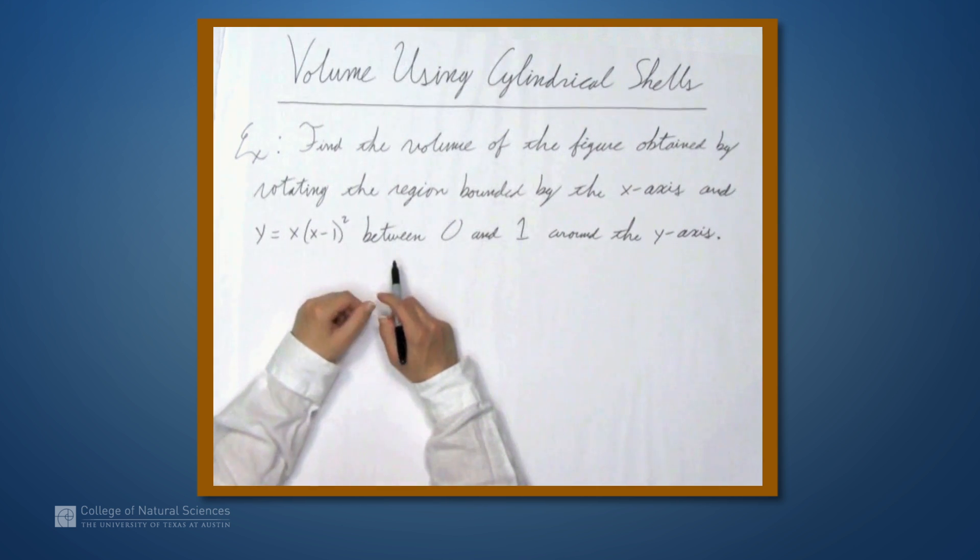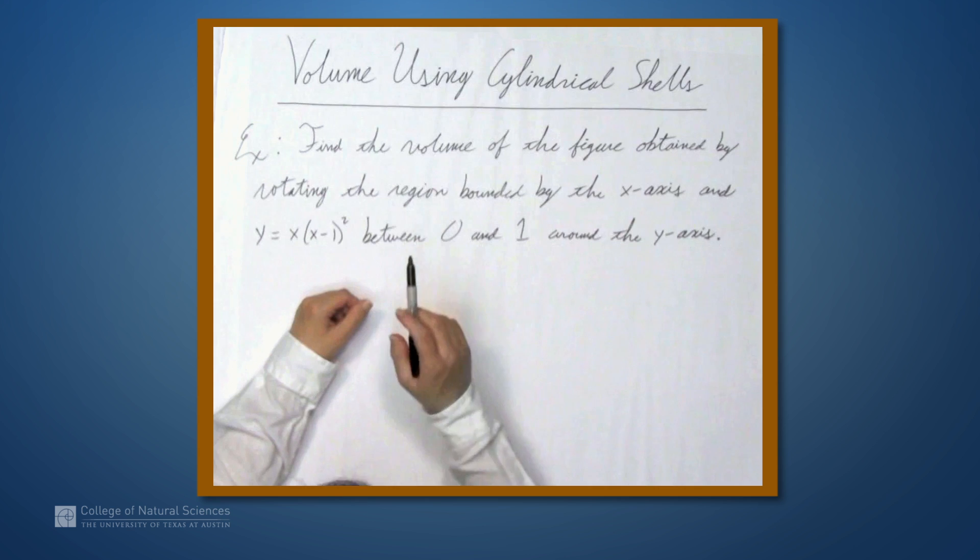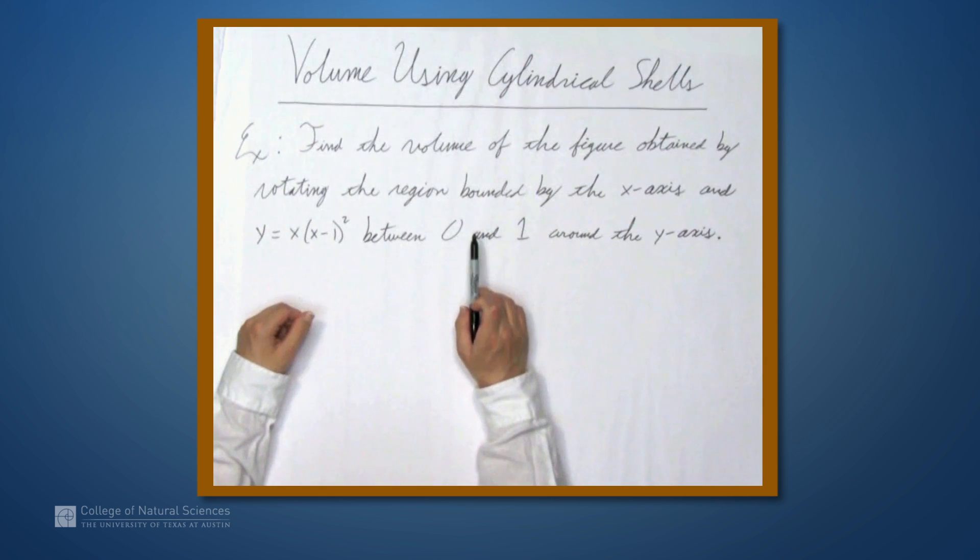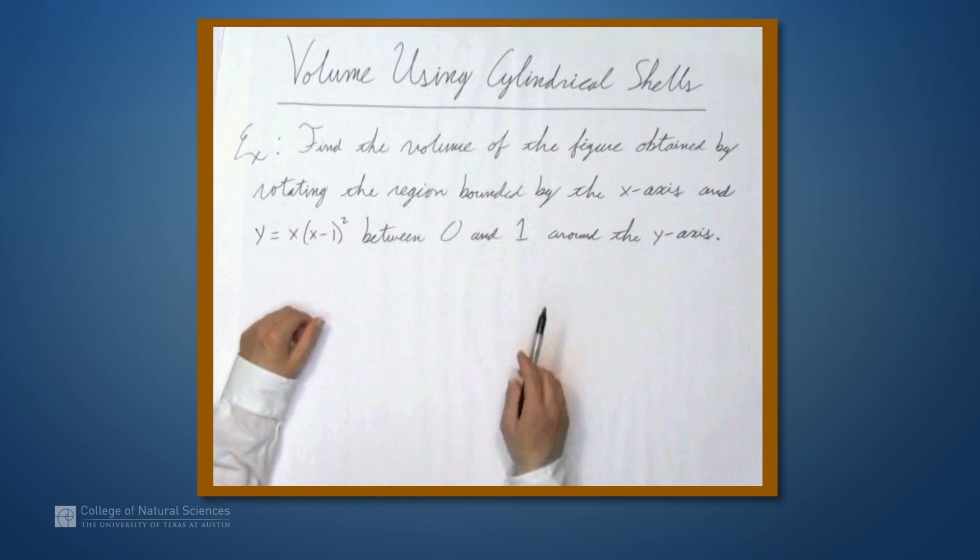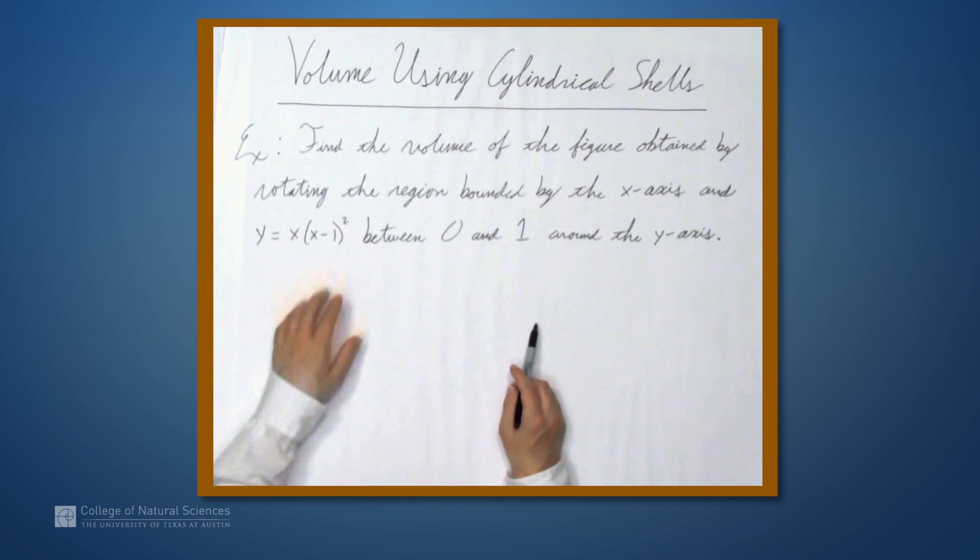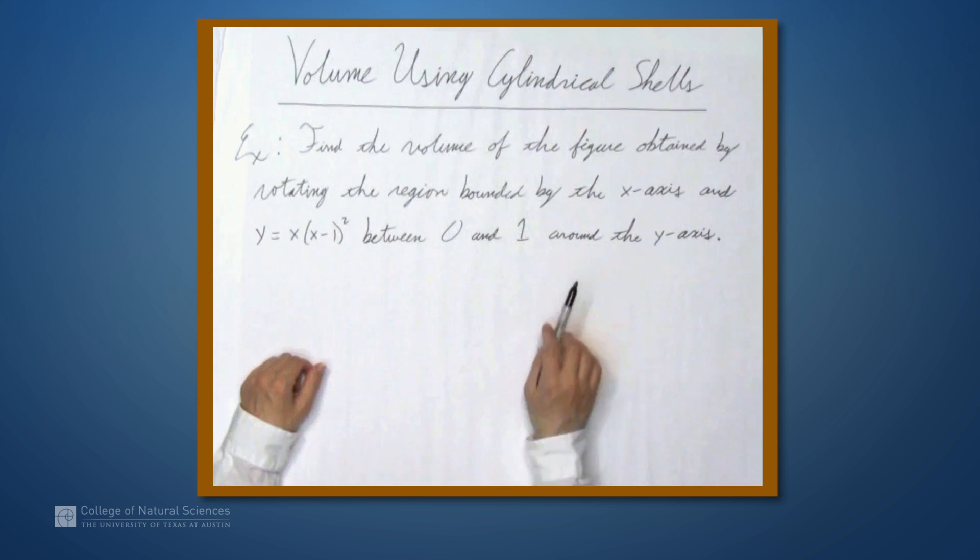We're here at the example table, and in this video we're going to talk about finding volumes using cylindrical shells. Let's start with an example. We're going to find the volume of the figure obtained by rotating the region bounded by the x-axis and the curve y equals x times (x-1) squared between 0 and 1 around the y-axis.